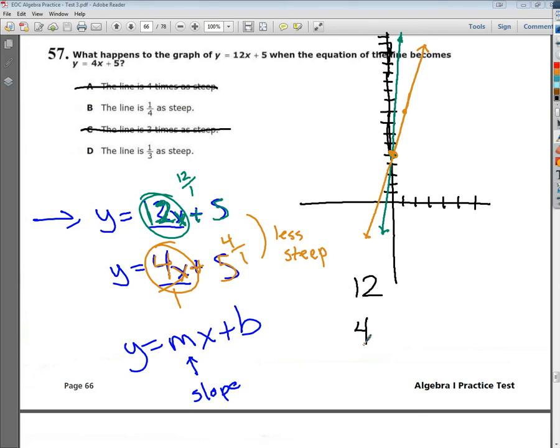So it's either B or D. So I'm going to make a comparison statement between the two slopes. Now, I'm going to divide 12 by 4, and it's going to give me 3. What that means is it's 3 times less steep in the second graph than it is in the original graph. But I can't think of it from that perspective.